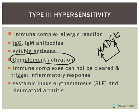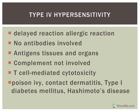The last type, Type 4, is called a delayed allergic reaction. Antibodies are not involved at all — it is T-cell mediated cytotoxicity, which is what makes it different from the other three. The antigens are on your tissues or organs, and complement is not involved. T cells bind to the antigens on tissues and organs and trigger damage. Examples include Type 1 diabetes mellitus, where beta cells in the pancreas become damaged.